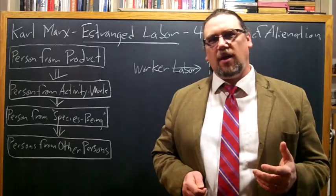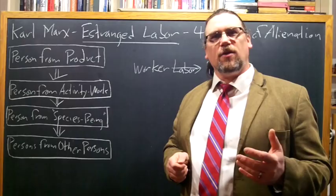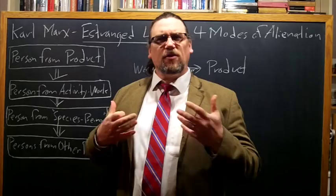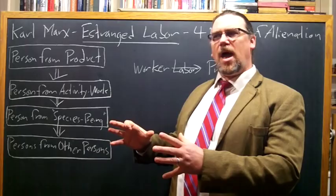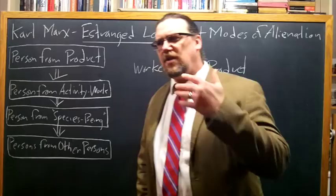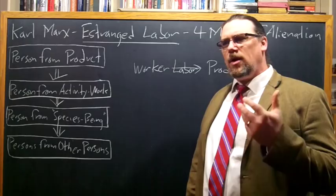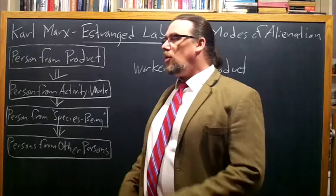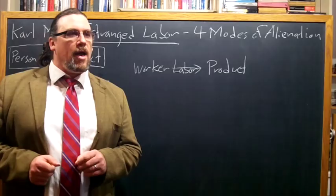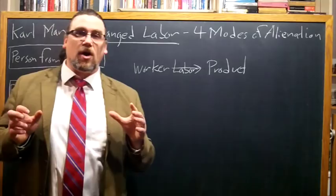Among Karl Marx's early works we find a piece called 'Estranged' or sometimes 'Alienated Labor,' depending on how you want to translate the German term 'Entfremdung,' which we'll talk about in just a moment. This is a very useful piece for introducing students to reading Marx and to thinking about his ideas, in part because it doesn't have some of the later baggage that comes with his other writings, and in part because what you can see him doing here in condensed form is talking about what modern industrial capitalist society does to people.